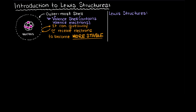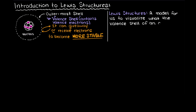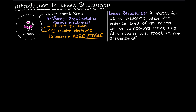But what are Lewis structures, or Lewis dot structures? Lewis structures are simply a model for us to use to easily visualize what the valence shell of an atom or compound looks like, and allow us to better understand how the atom, ion, or compound will react in the presence of another, all in an effort to become more stable.